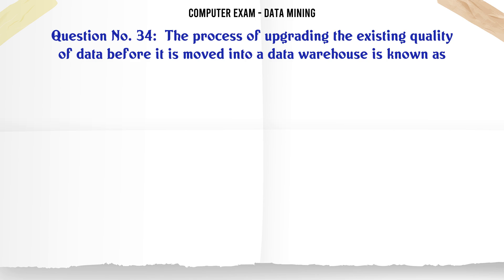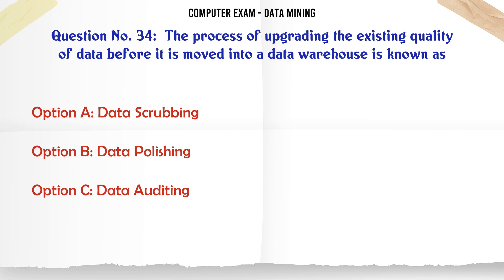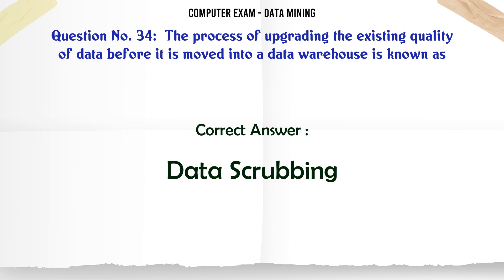The process of upgrading the existing quality of data before it is moved into a data warehouse is known as: A. Data scrubbing. B. Data polishing. C. Data auditing. D. Data aggregation. The correct answer is Data scrubbing.